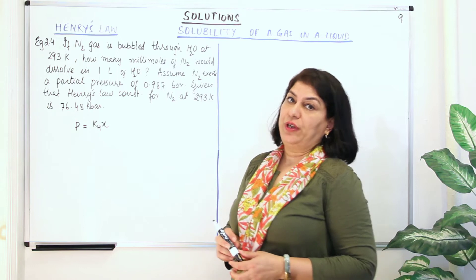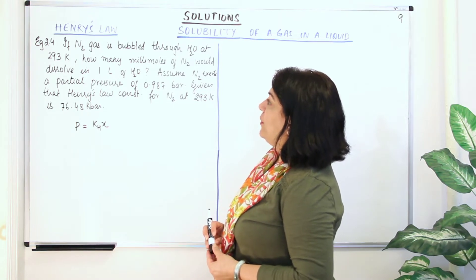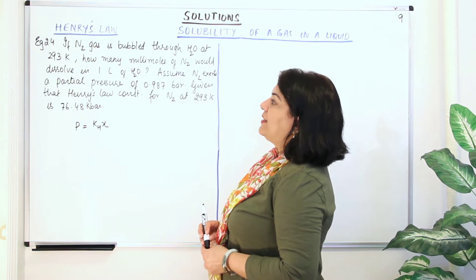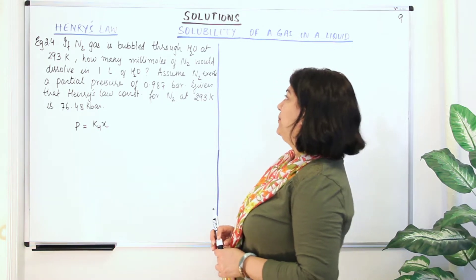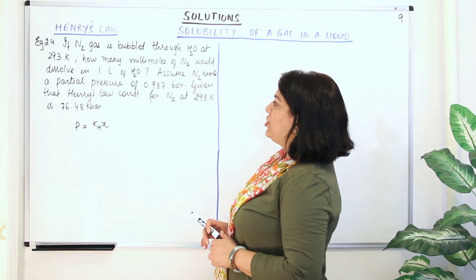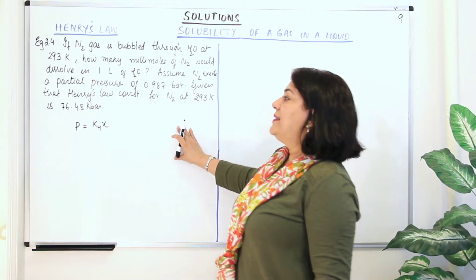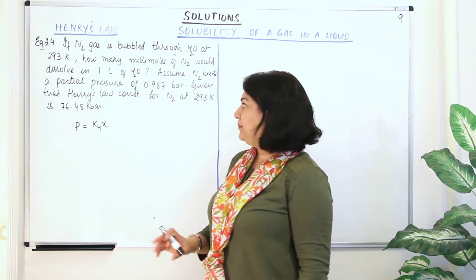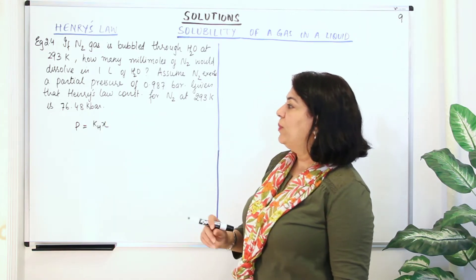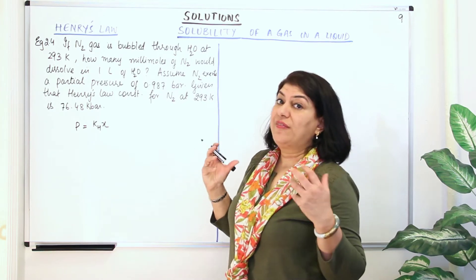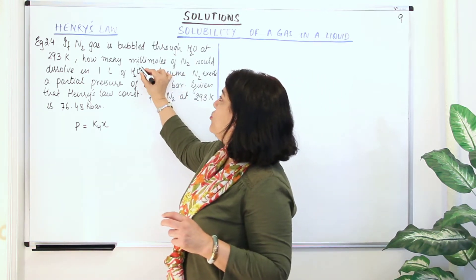The first question is Example 2.4 — it is the solved example of your NCERT textbook. The question reads: if nitrogen gas is bubbled through water at 293 Kelvin, how many millimoles of nitrogen would dissolve in one litre of water? Assume nitrogen exerts a partial pressure of 0.987 bar. Given that Henry's Law constant for nitrogen at 293 Kelvin is 76.48 kilobars.